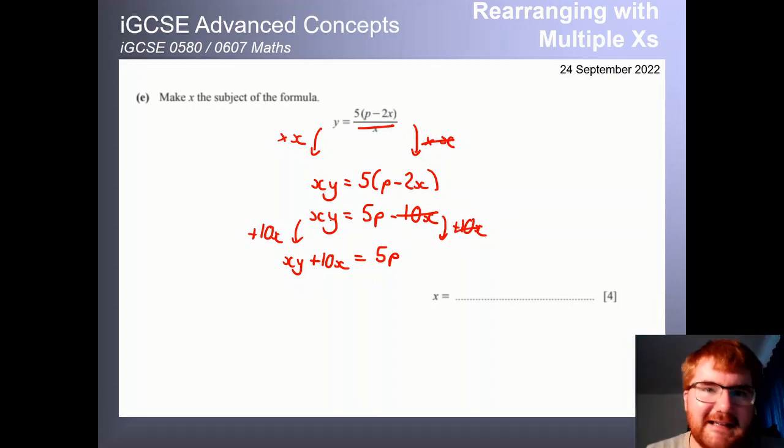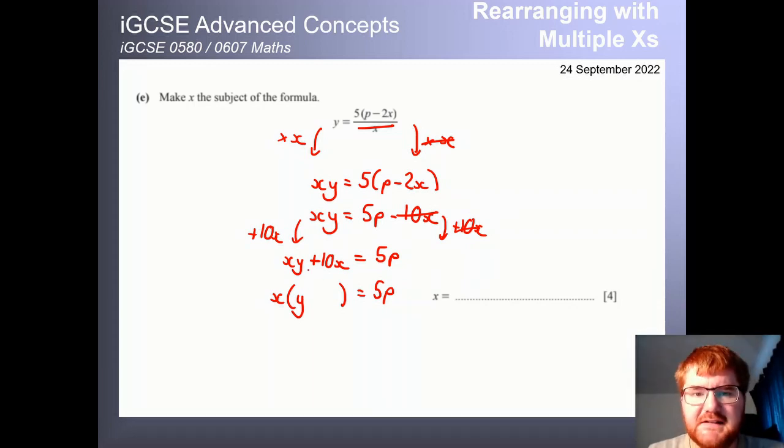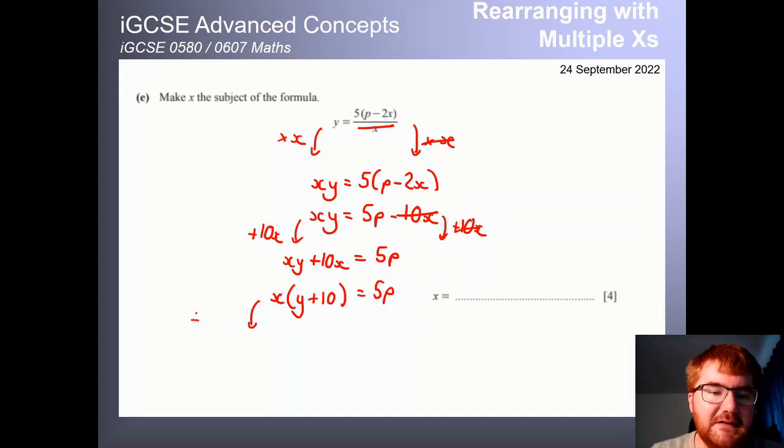And I have a think at home. What do we do next? It is the factorizing into a single bracket. So notice they have x in common. And then we work backwards. So what do you do to x to get to xy? Just times by y. What do you do to x to get to 10x? Just plus 10. And now we've got it in the way that we want, just one term in x. And that means now we can divide by the bracket.